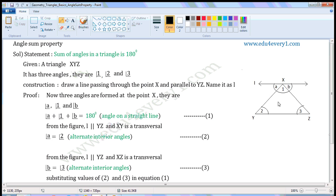Again, from the figure, L is parallel to YZ and XZ is a transversal. So, Angle B will be equal to Angle 3. Alternate Interior Angle. Mark it as equation 3.